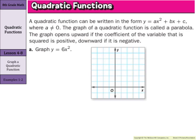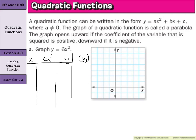When it comes to graphing these, we want to create a table with columns for x, the rule — which is 6x squared — and y. You can also add an xy column. When we pick numbers, it is very important that you pick x values that are both positive and negative, and it's always helpful to include 0. So our x values will be negative 2, negative 1, 0, 1, and 2.